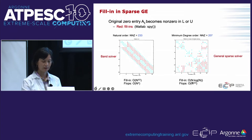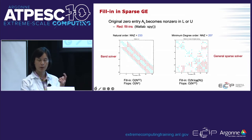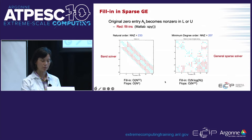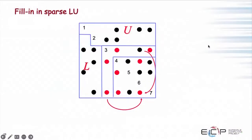The gap in fill-in is represented by algorithm complexity. Using a general sparse solver with minimum degree or nested dissection ordering gives fill-in of n log n corresponding to memory, and flops of n to the 3/2 — much better than the band solver. That's the goal: to do this general sparse solver.